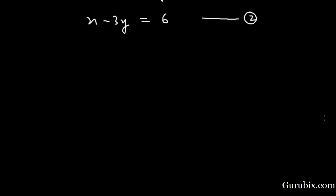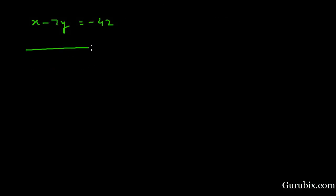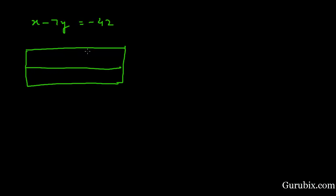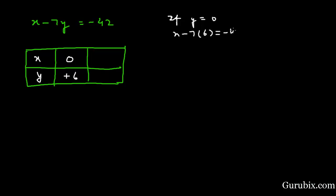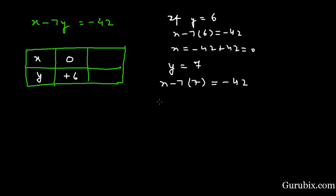Now we shall solve these two equations using the graphical method. For Equation 1, x minus 7y equals minus 42, we draw a table. If y equals 6 then x equals 0; if y equals 0 then x equals minus 42 plus 42 which is zero — so (0, 0). If y equals 7 then x equals 7. So we have the coordinate pairs for line 1.